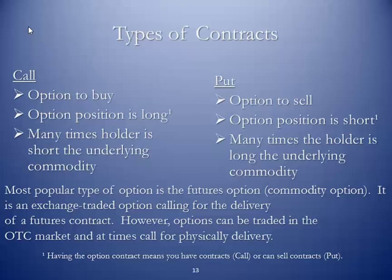There are two types of options contracts: the call and the put. A call is an option to buy — within the option you have a designated commodity, the number of contracts, and a specified price. Your option position is long. So once you buy a call option, since you have the right to buy the contracts, your option position is considered long. Many times the holder is short the underlying commodity. For example, a crude oil refiner would want to buy a call option for crude oil contracts, thus having the right to buy the crude oil contracts at a certain price — again, not the obligation. So while their physical position is short, their options position is long.